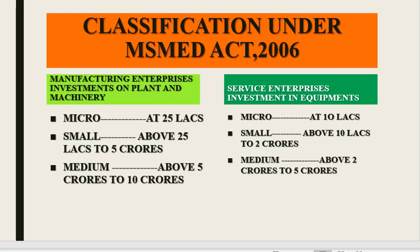Service enterprises were classified based on investment in equipment. Micro service enterprises had investment not more than 10 lakhs. Small enterprises under services had investment above 10 lakhs but not more than 2 crore. Medium enterprises under services were defined as those with investment above 2 crore but not more than 5 crore.